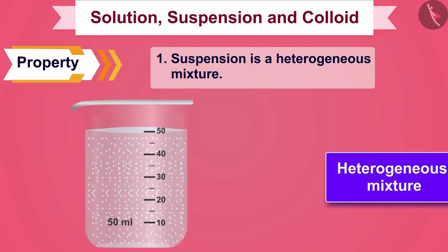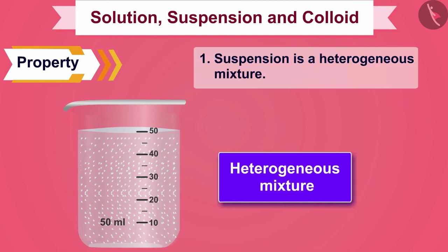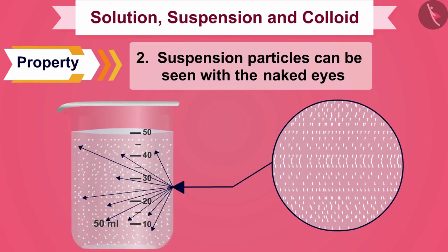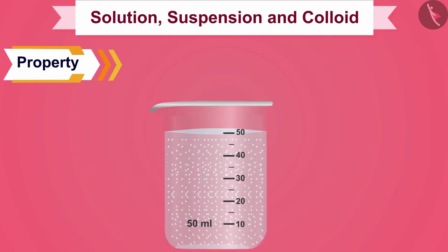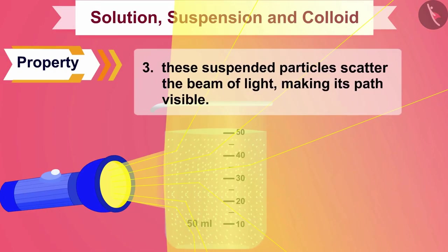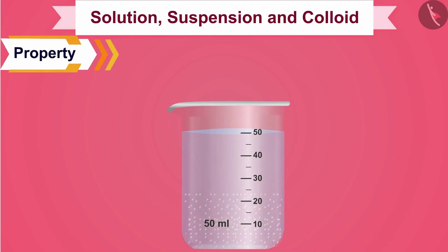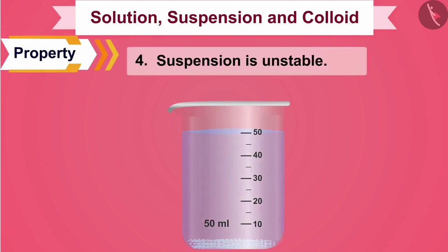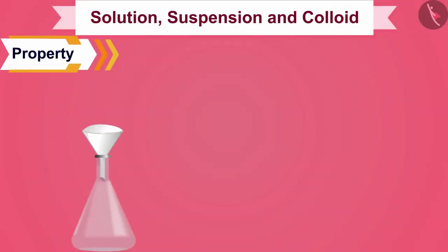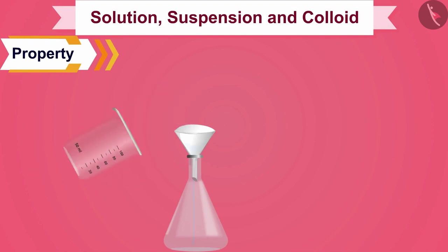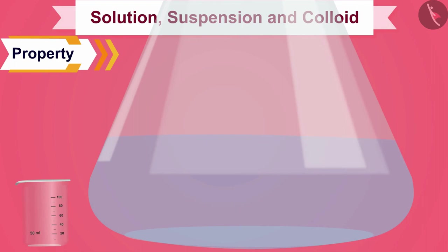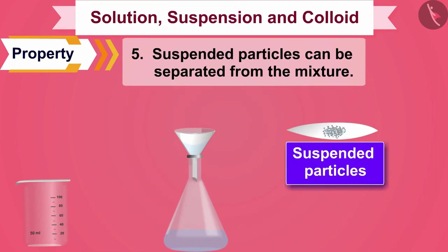We can see the suspended particles with our eyes. The properties of suspension are: one, suspension is a heterogeneous mixture; two, suspension particles can be seen with the naked eye. If we pass a beam of light through the suspension with a torch, the suspended particles scatter the beam of light, making its path visible. Solute particles settle down when left undisturbed, meaning suspension is unstable. If we filter the suspension with a filter paper, we can easily separate the chalk powder from water, so suspended particles can be separated by filtration.